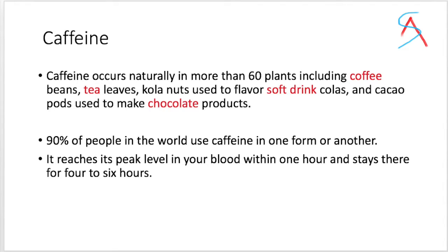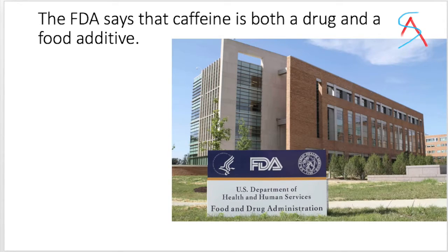Caffeine generally occurs in more than 60 plants. Around 90% of the people in this world use caffeine in one form or another. It is found in coffee, tea, soft drinks, chocolates, and lot more. The FDA says that caffeine is both a drug and a food additive.